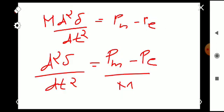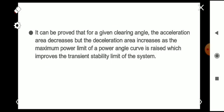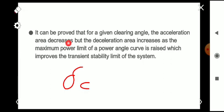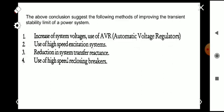It can be proved that for a given clearing angle delta c, the acceleration area decreases but the deceleration area increases as the maximum power limit of the power angle curve is raised, which improves the transient stability limit of the system. This is based on the equal area criterion we have already discussed.